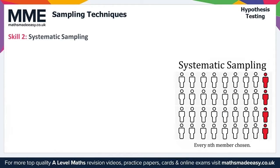Let's take a look at skill two on systematic sampling. A systematic sample selects every Nth member of a population. To create a systematic sample, we give every member of the population unique sequential numbers, then select a start number A, then A plus N, then A plus 2N, and so on.